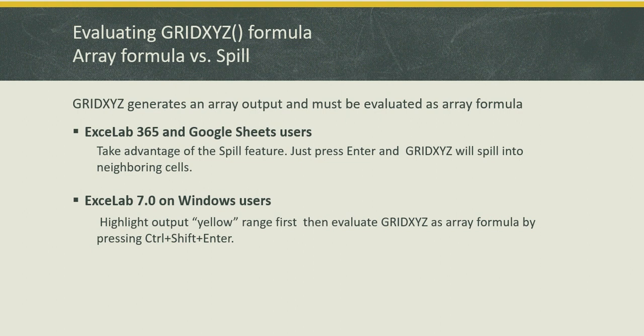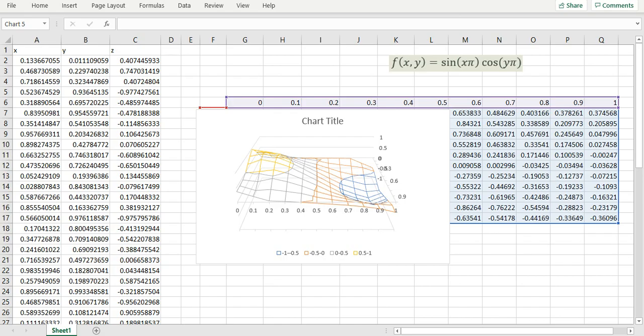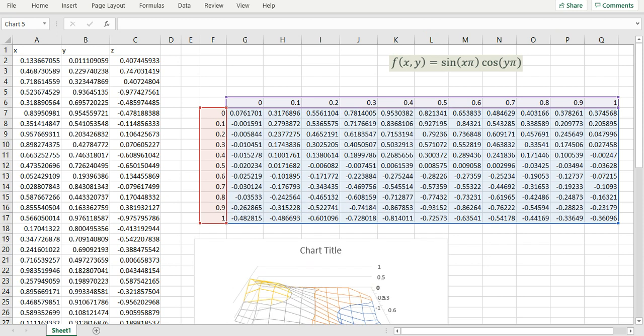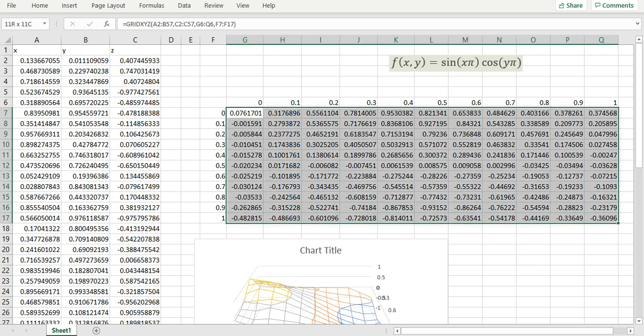Let me demonstrate this for you in Excel. If you are using ExceLab 365 or Google Sheets, as we have demonstrated, you can simply type in your formula and press Enter and it will automatically spill into neighboring cells with the result. However, if you are using ExceLab 7 on Windows platform or PC, that will not work. So let me show you how to do this. I'm going to copy my formula here and then I'm going to delete this result.